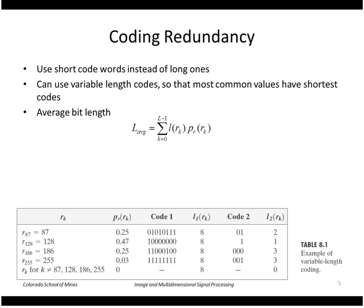Let's first look at coding redundancy where we want to use short code words instead of long words. We can use variable length codes so that the most common values have the shortest codes. Remember that the way we compute the average of a quantity L is by taking the probability of that value times the value and summing all that up.